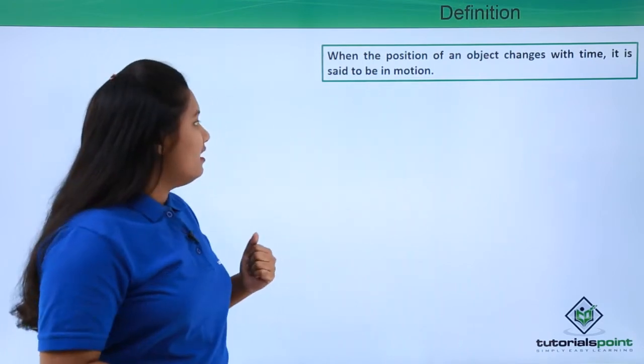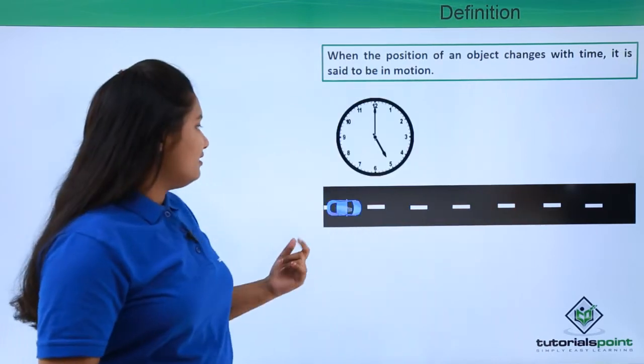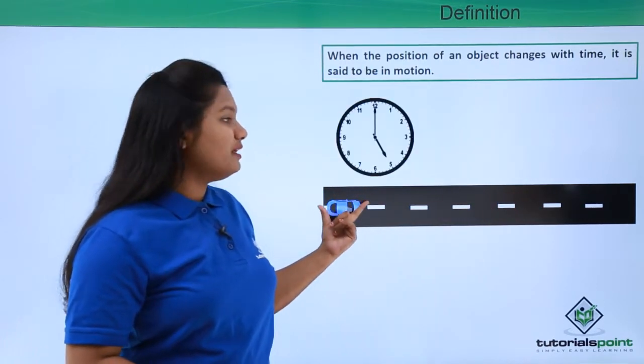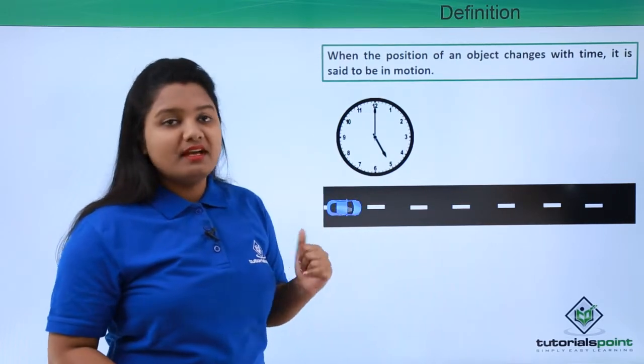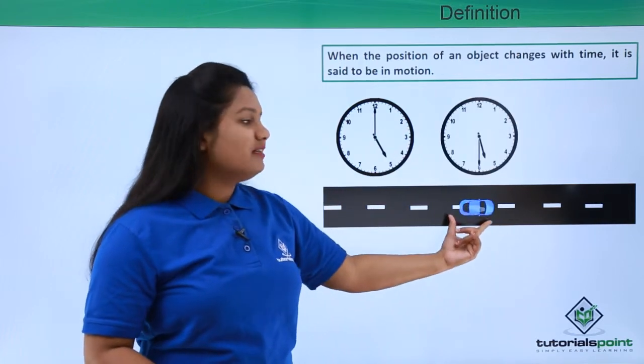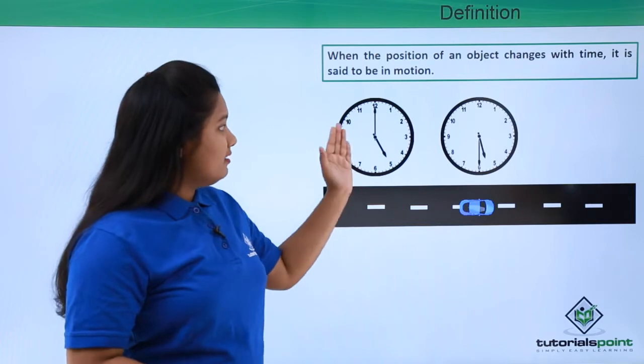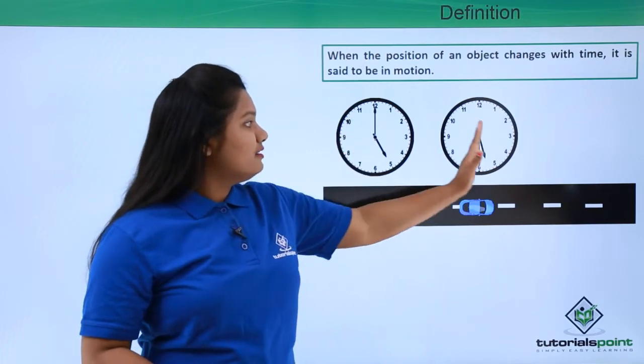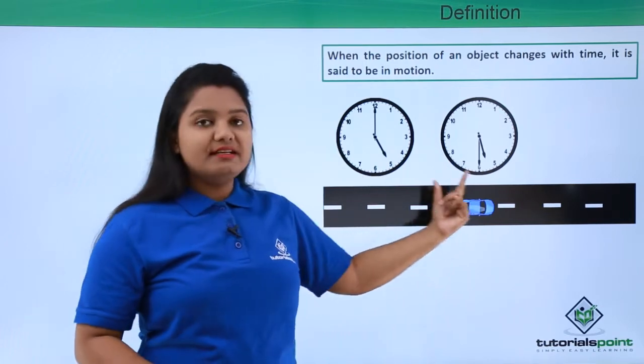Now let me explain this a bit further. Suppose we have a straight road and a car starts from here at this point at five o'clock. Now let's say after half an hour it reaches here at this position. Now here we can clearly see that with the change in time, that is after half an hour, we find the car to be in a different position.